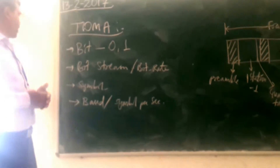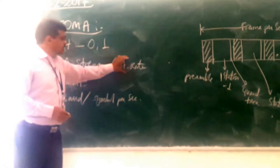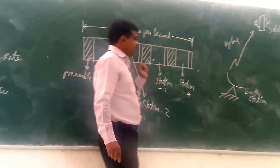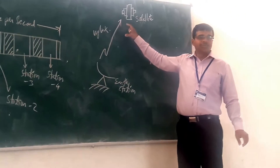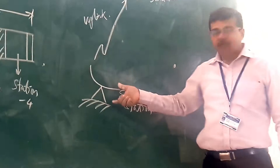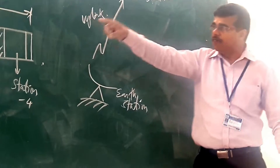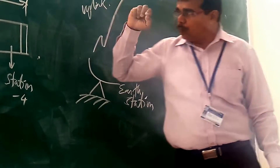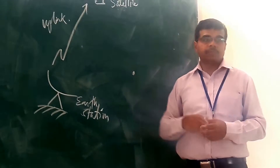When we are going for transmitting information, it is something like sending the information from the earth station to the satellite. For sending the information from the earth station to the satellite, we are having the BIT. So we will modulate that BIT and then we will transmit it.